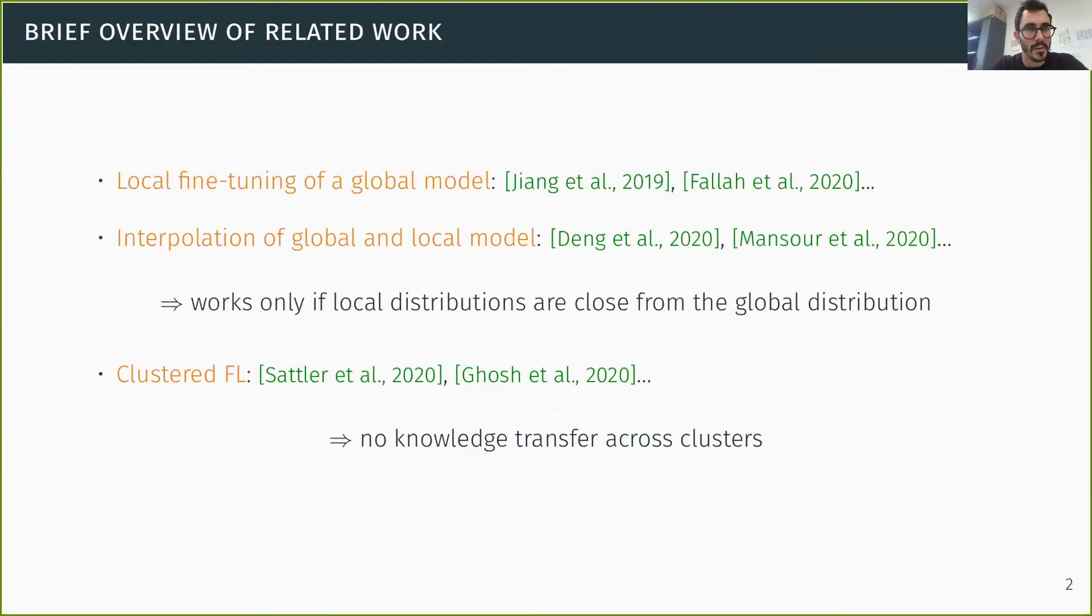Let's go through a brief overview of related work. The goal here is not to be exhaustive, but to try to highlight the main differences with this present contribution. So a simple approach to personalized FL is to do local fine tuning of a model that has been trained globally. And you can also try to interpolate, for instance, between this global model and a purely local model. The problem with this is that this will only work well if local distributions are close to the global distribution.